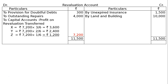Journal entry: revaluation account debited 7,200, to X's capital account 3,600, to Y's capital account 2,400, to Z's capital account 1,200. Now build the partners' capital accounts — three columns. Opening credit balances: X = 45,000; Y = 30,000; Z = 15,000.